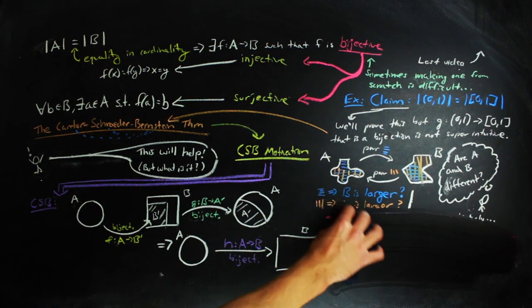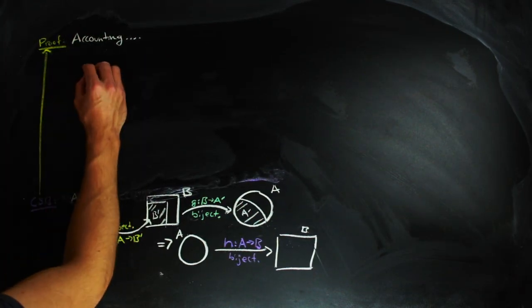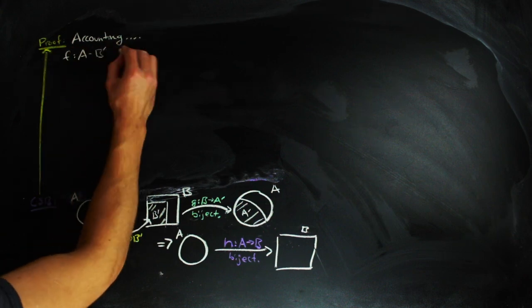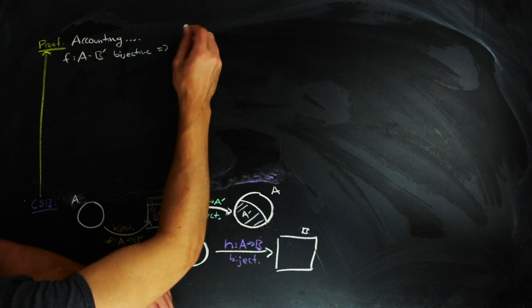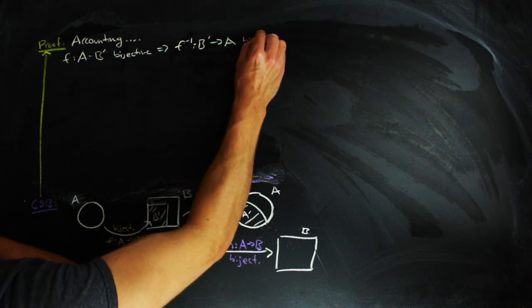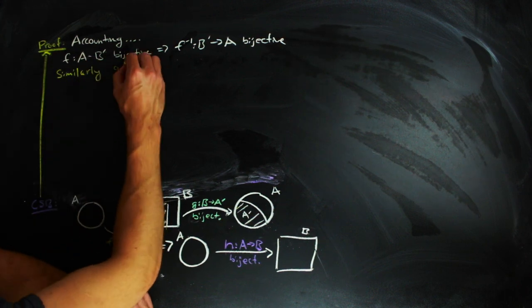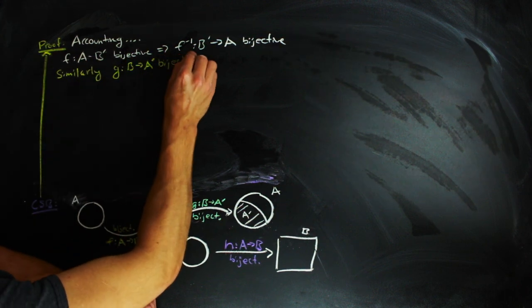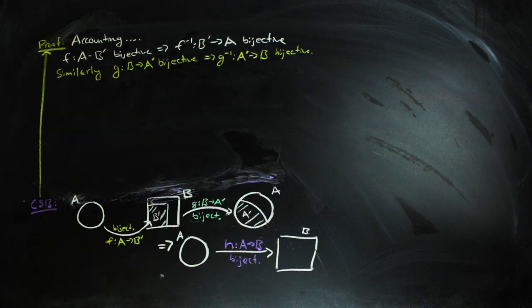But how would you go about proving it? Doing so requires a bit of accounting. So just as we have bijection F from A to a subset of B, let's call it B', we also have a bijection F inverse from that subset of B, B', to A. Similarly, since we have a bijection G from B to a subset of A, which we'll call A', we also have a bijection G inverse from A' to B.